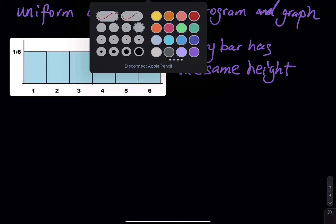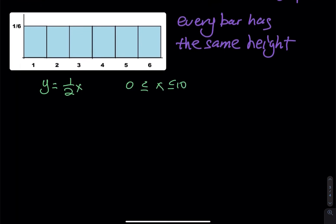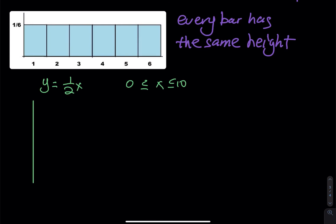Let's say I give you a function: y equals 1 half, with x between 0 and 10. You draw a y-axis and x-axis. At x equals 0 and x equals 10, you make marks. Since y equals 1 half means y is always equal to 1 half — not going up, not going down — you just draw a horizontal line between those two points.